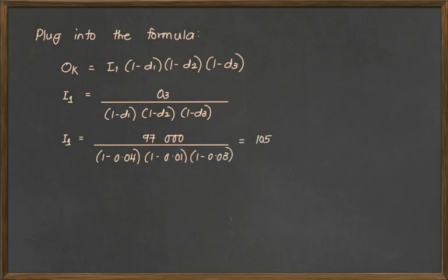So this should give us an answer of 105,218.86. And again, this is input, so we need to round this up. So this will now become 105,219 units.